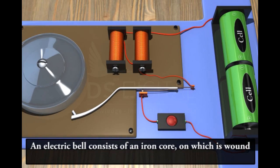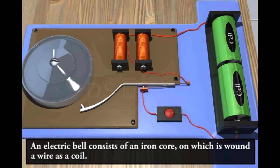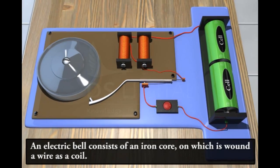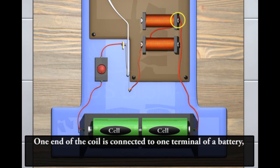An electric bell consists of an iron core on which is wound a wire as a coil. One end of the coil is connected to one terminal of a battery.